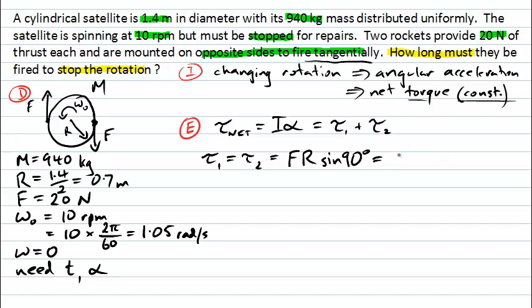And so that torque there will in fact simply be the force multiplied by the radius, and therefore our net torque will simply be twice the force times the radius.